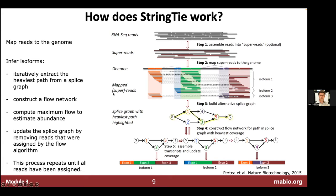At a high level, StringTie takes RNA-seq reads, performs splice-aware alignments to the genome, constructs a graph, and then from that graph constructs a flow network. It calculates the maximum flow abundance through different paths in the graph to estimate the expression of different isoforms, yielding an expression estimate at the isoform level for each possible transcript.